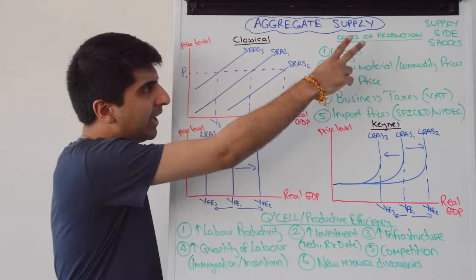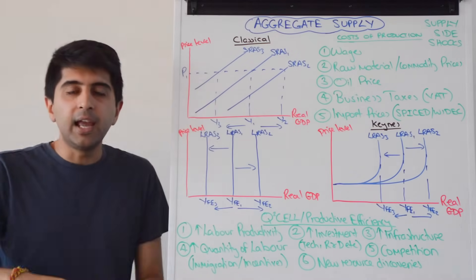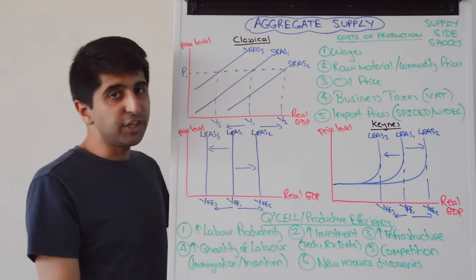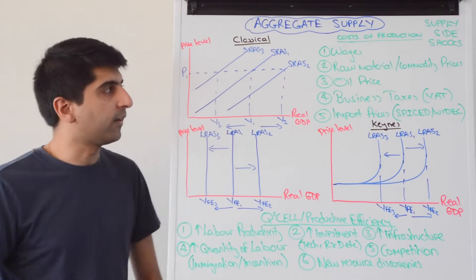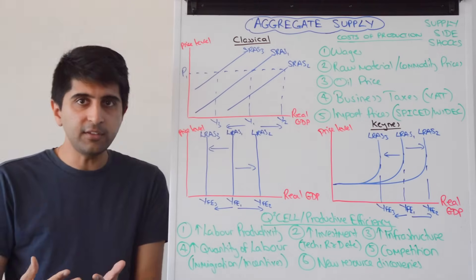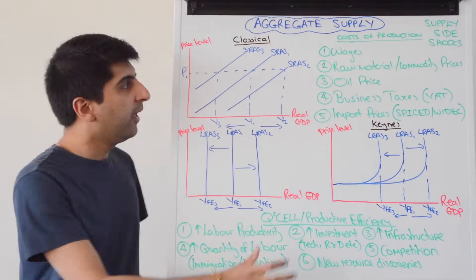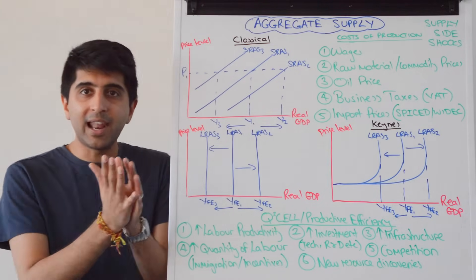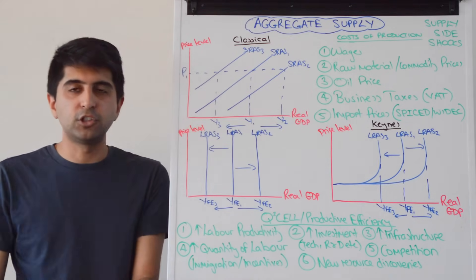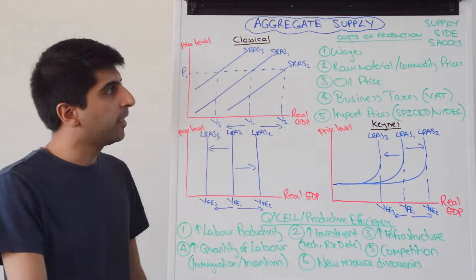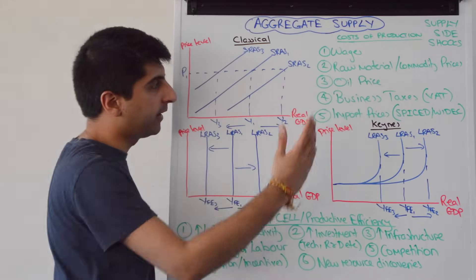Another good thing to keep in mind: costs of production, but also think 'shocks'. When SRAS shifts, there is a supply side shock in the economy, because this shift can happen very quickly — even overnight. These are shocks to the economy. They can be positive if SRAS shifts to the right, representing a falling cost of production — a positive supply side shock. They can also be negative when SRAS shifts to the left, causing negative growth and higher inflation when we put AD on our diagram. That's a negative supply side shock which can lead to stagflation.